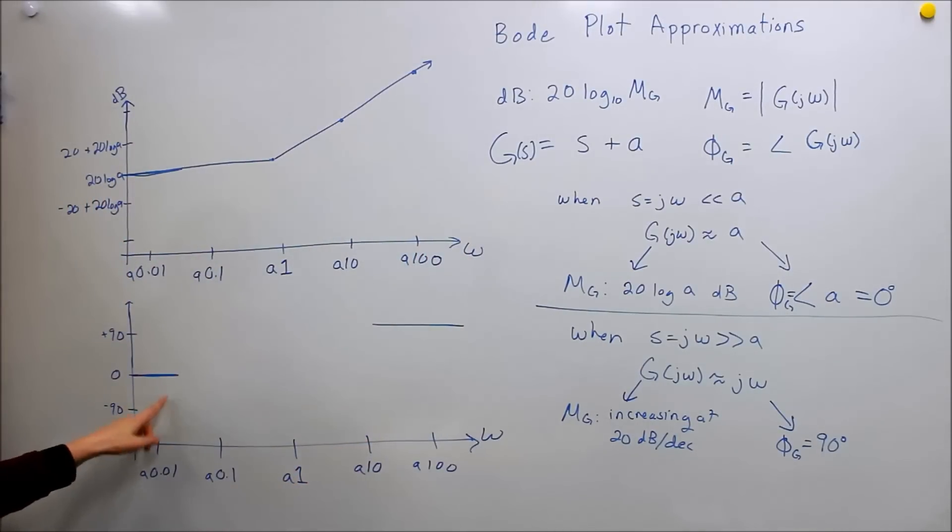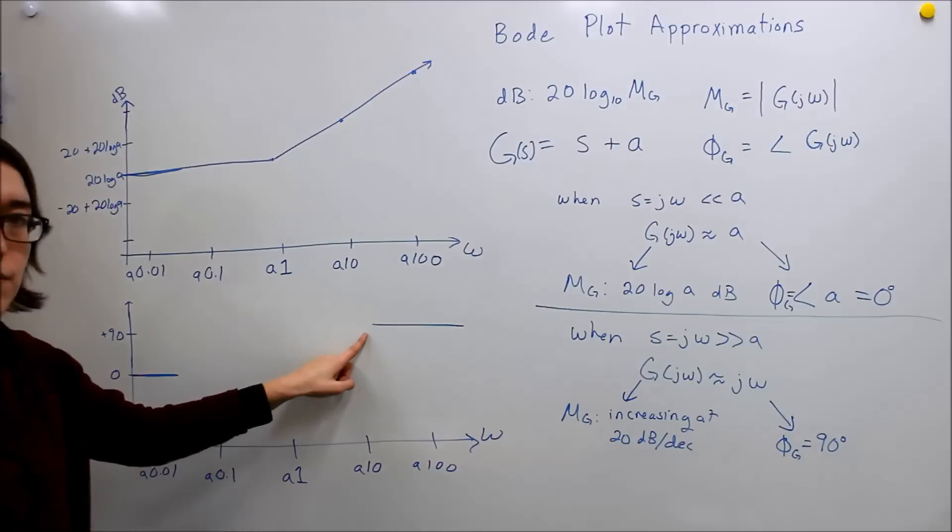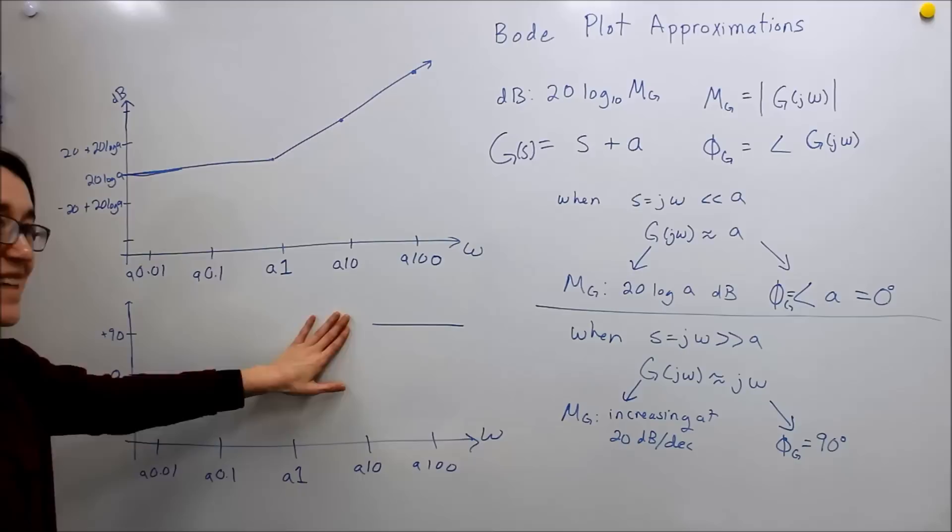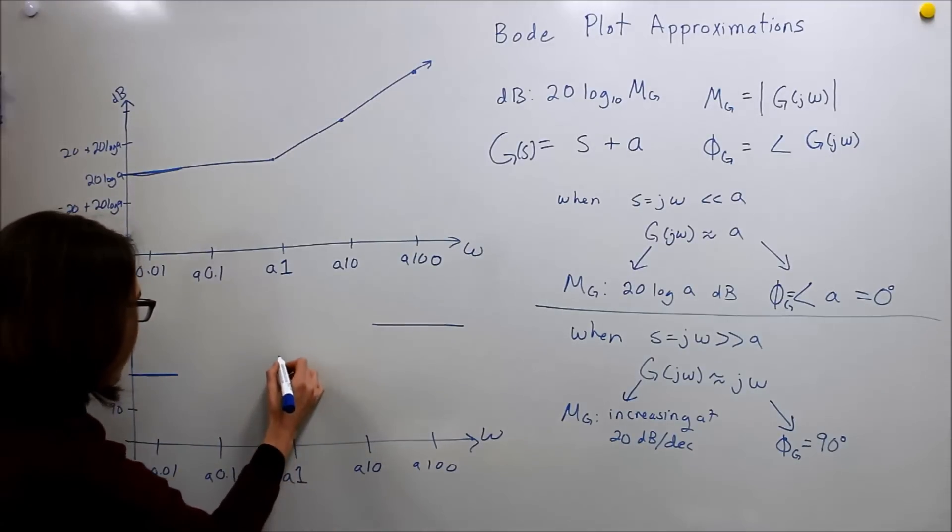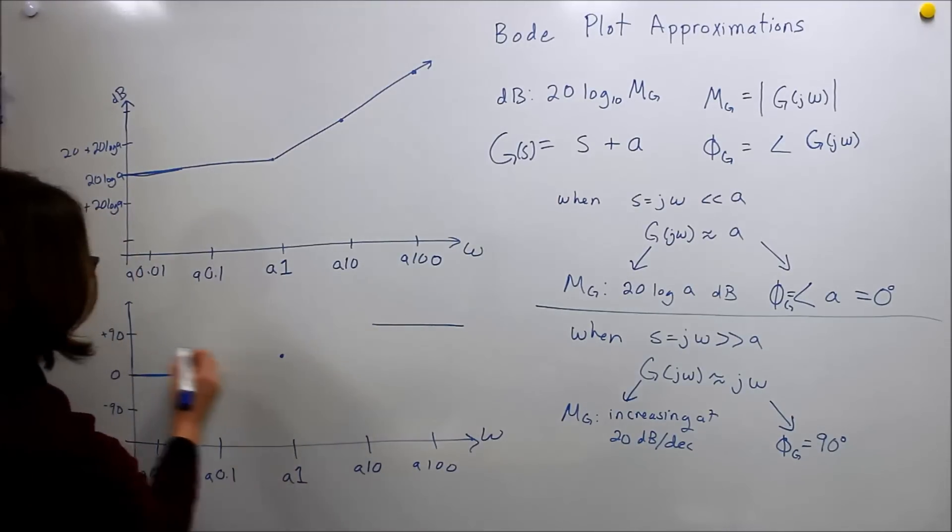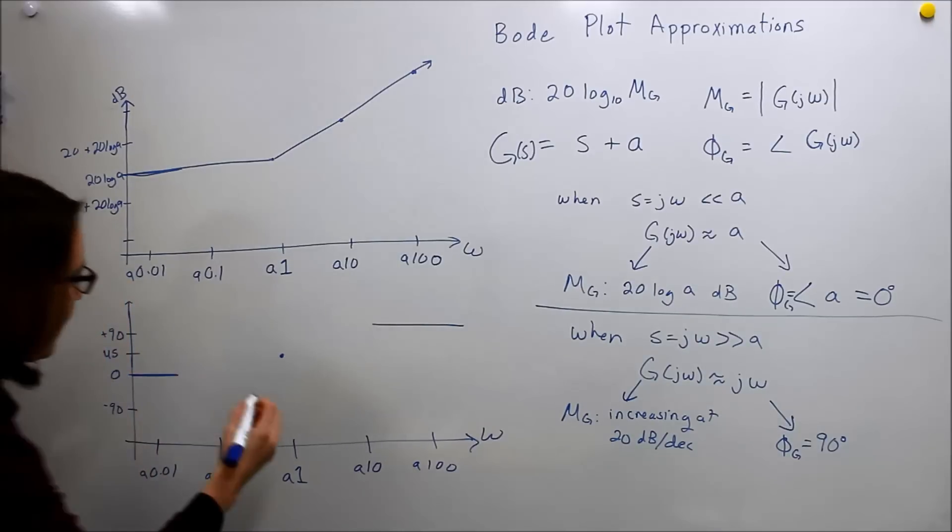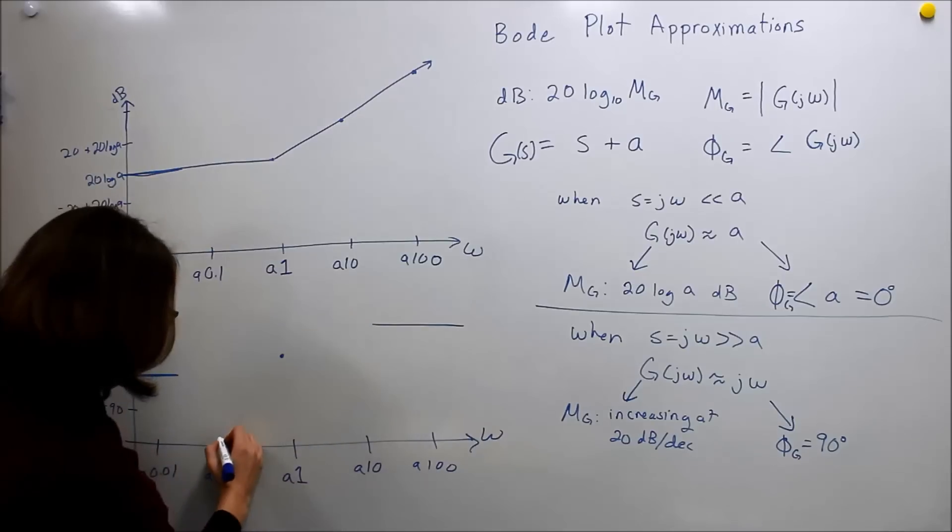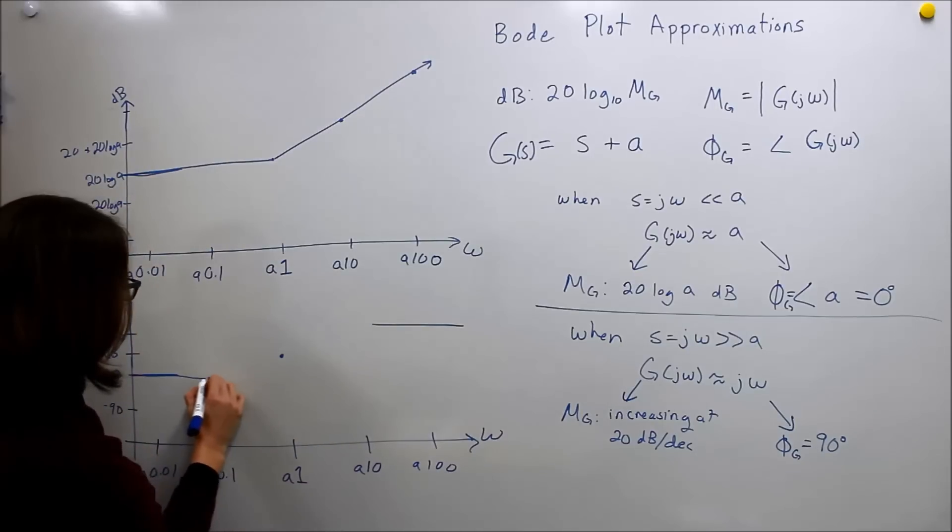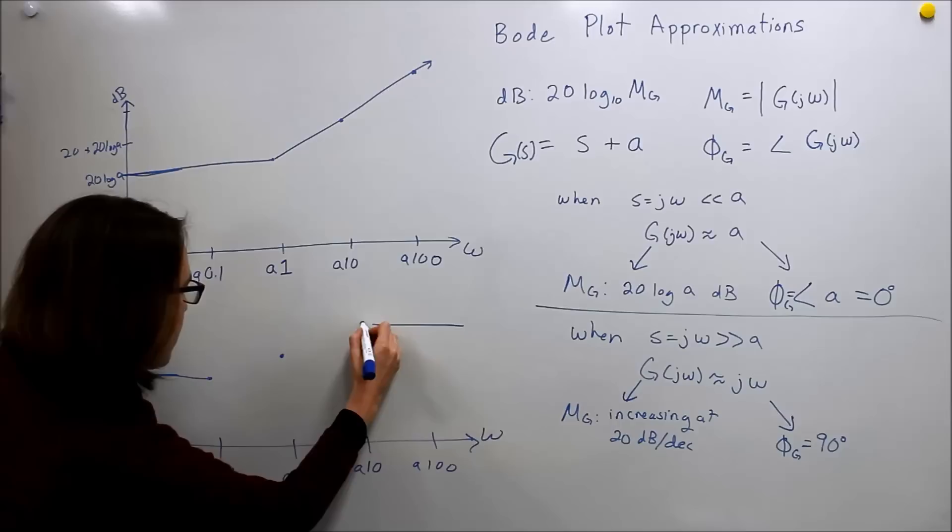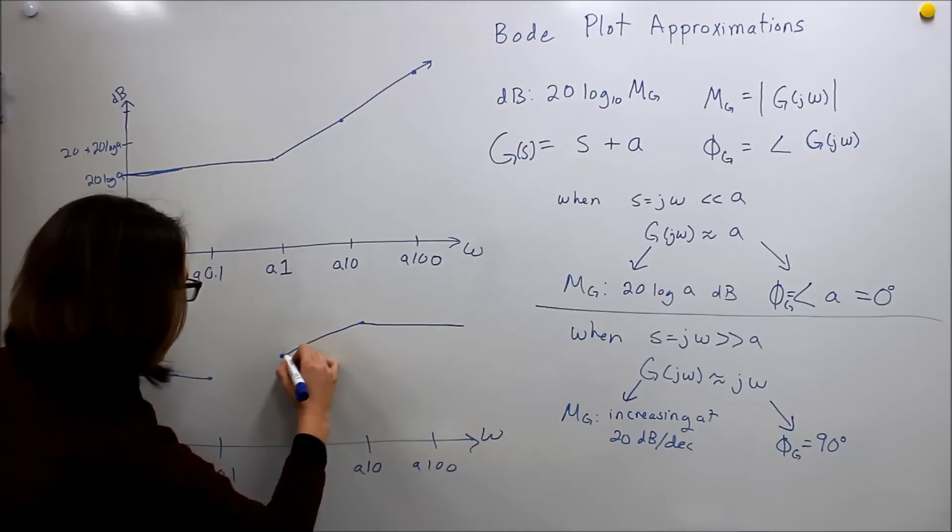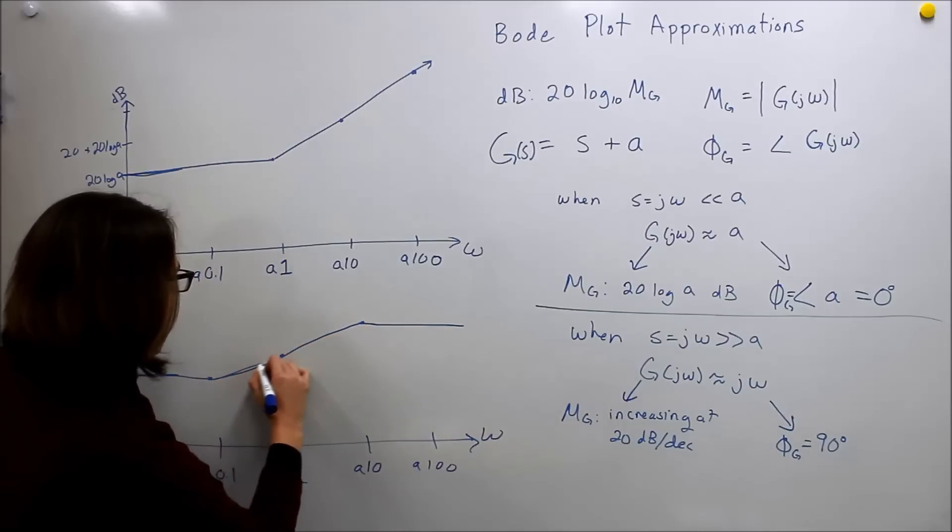Same here, we know we're starting at 0, and we need to get to 90, and this is kind of our middle point at a, so we end up approximating this as a linear line. We start approximately here, and it's just a linear line between these two.